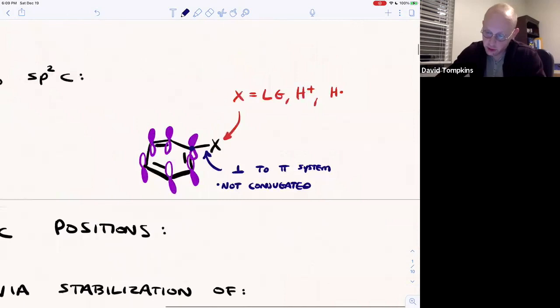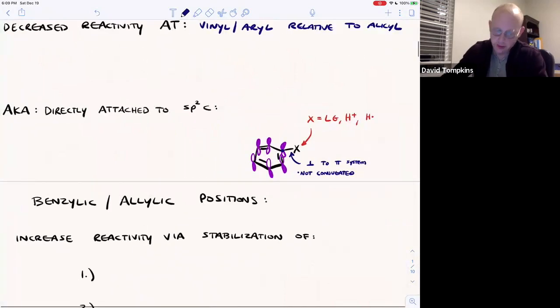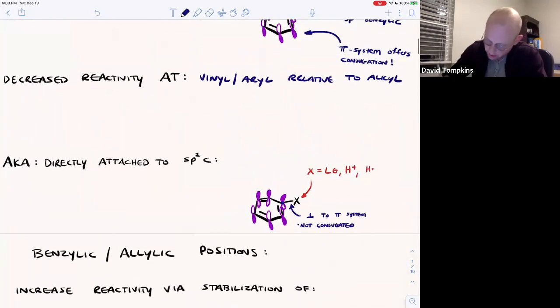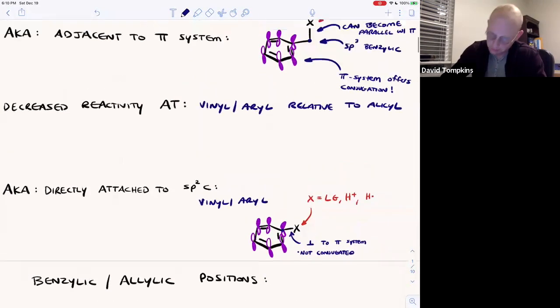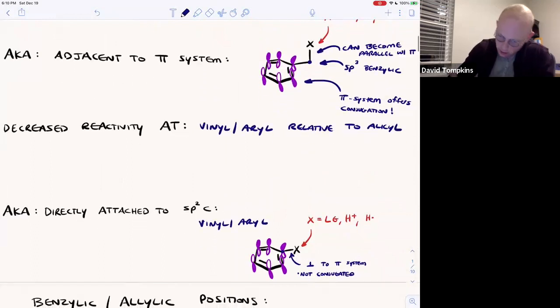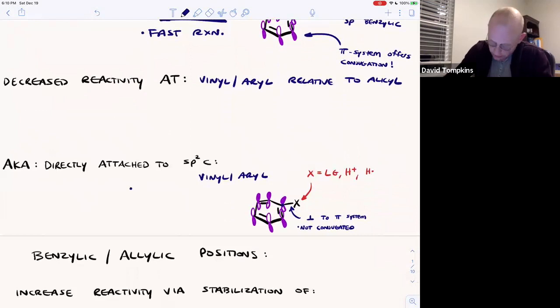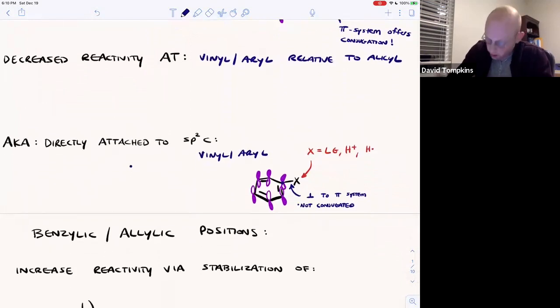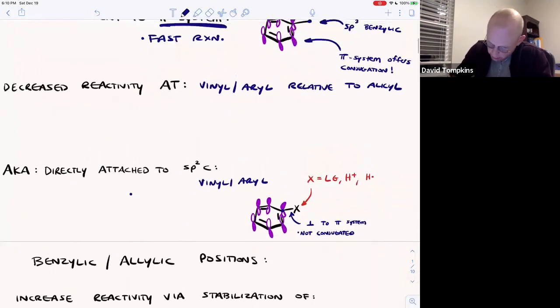So it's not going to be able to become conjugated as an intermediate or a transition state. And therefore, it's usually very slow to react if it's going to be vinyl or aryl. So we'll see that when you're adjacent to a pi system that generally leads to a fast reaction or something that's got increased reactivity. If it's directly attached to the sp2 carbon, an aryl or vinyl, then it will be slow reaction generally.